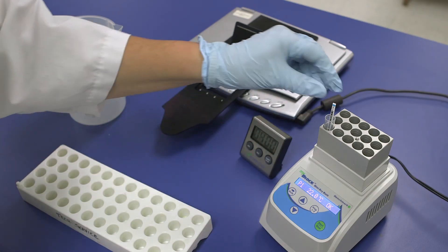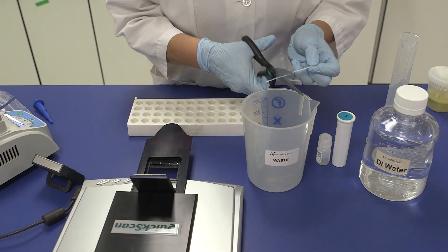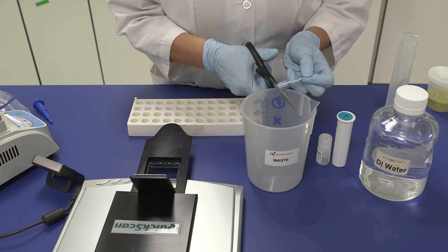Step 5. At exactly 4 minutes, remove the test strip from the tube, cut off the tail pad and immediately place the strip in the quick scan reader.